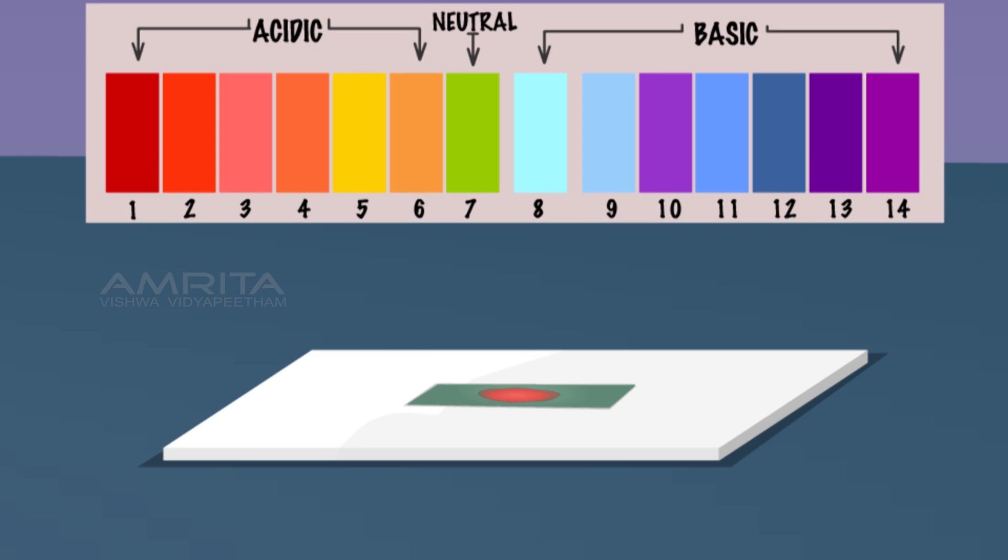Compare the color produced on the pH paper with the different color shades of a standard color pH chart and note down the pH from the color chart. The pH of acetic acid is 3.